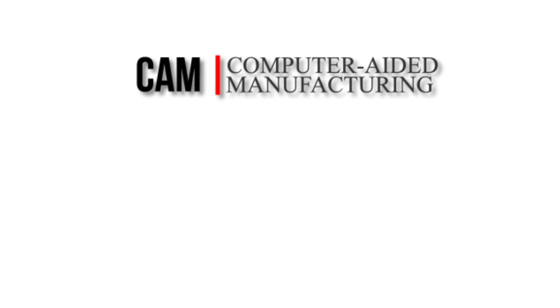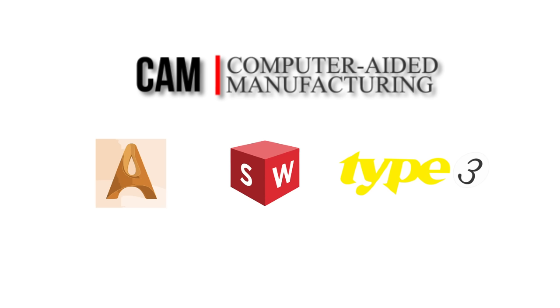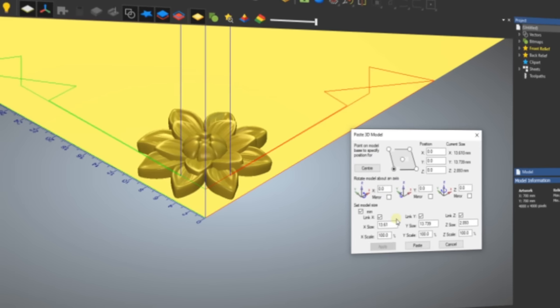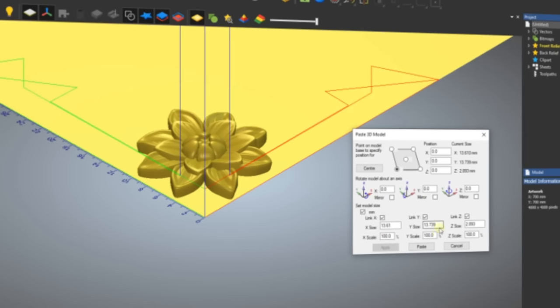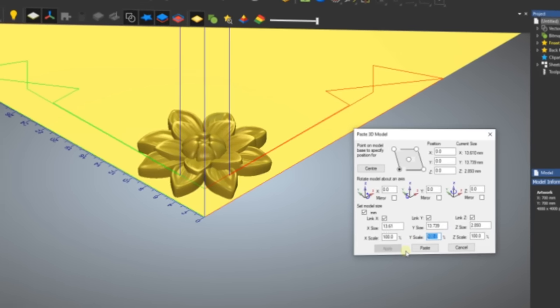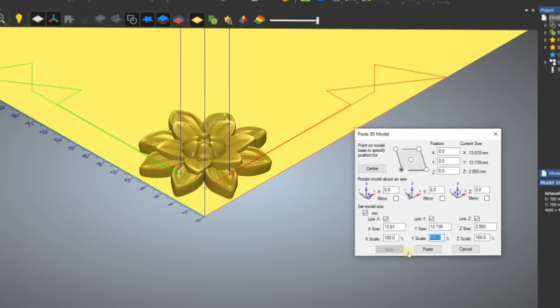CAM, computer-aided manufacturing software, is used to specify all cutting settings and to convert a 2D or 3D model into G-code. Designers often use combined CAD-CAM software programs that have the functionality of both, and allow both tasks to be performed in the same workspace.